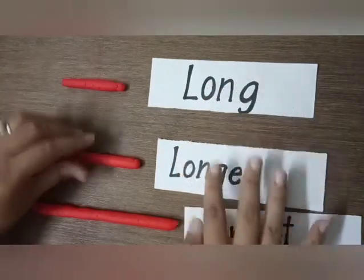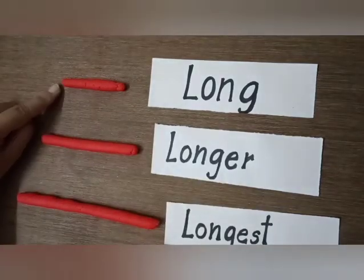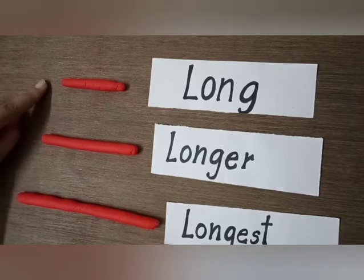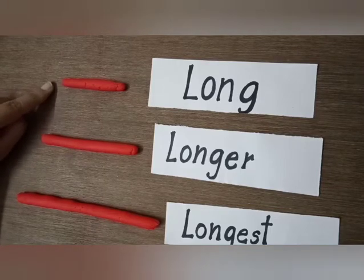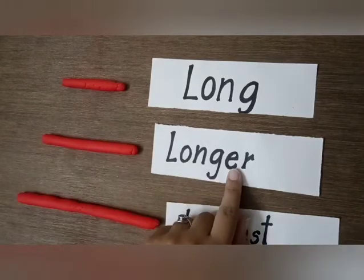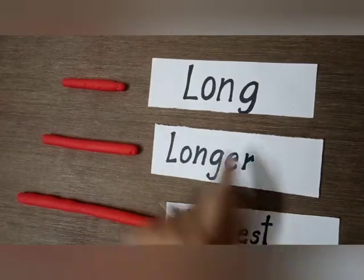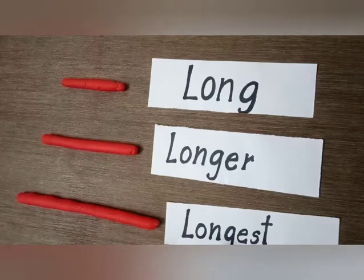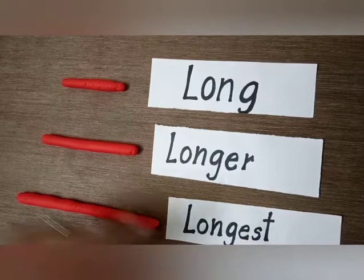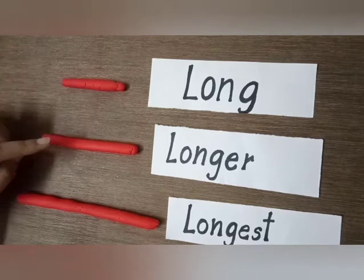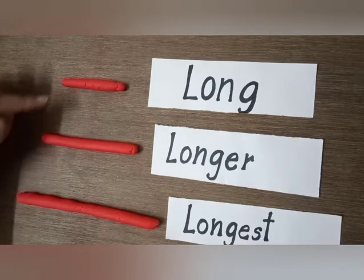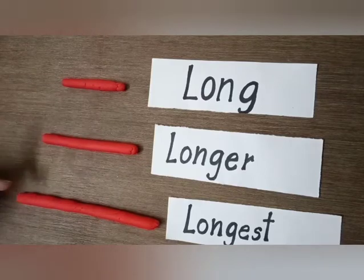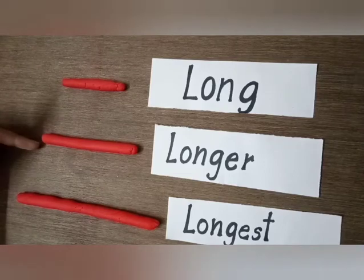This is long, it is longer, and it is longest. When we compare two things, we add 'er' — long becomes longer. And when we compare three things or more than two things, we add 'est' — E-S-T. Longest. When we compare these two, this is the longer one. But when we talk about all three, this is the longest one among these three sticks. Long, longer, longest.